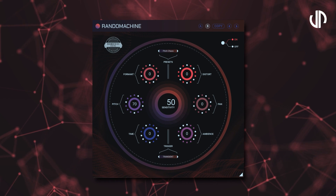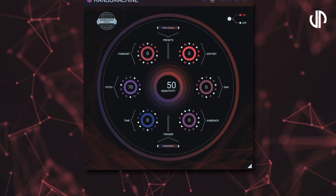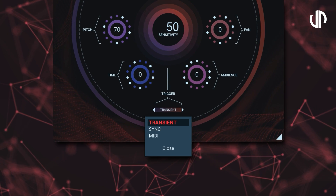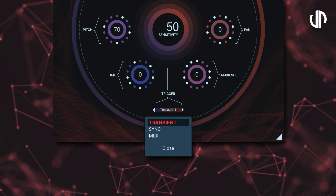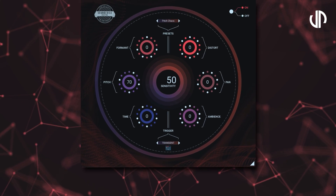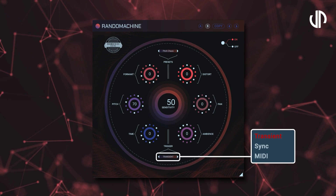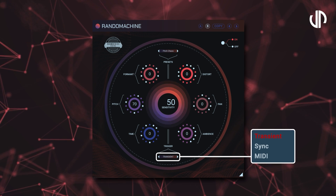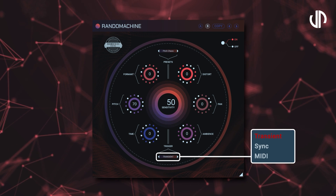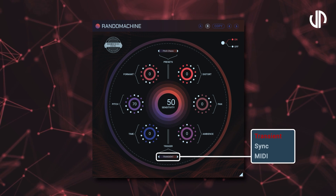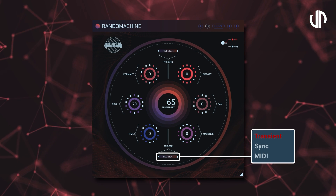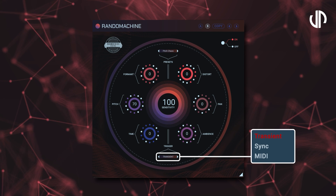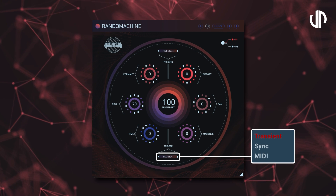Now let's talk about the three different randomisation modes. Random Machine has three options right under Trigger: Transient, Sync, and MIDI. Transient initiates randomisation based on incoming audio signal transients. The sensitivity parameter regulates the level of responsiveness to these transients, fine-tuning the triggering process.